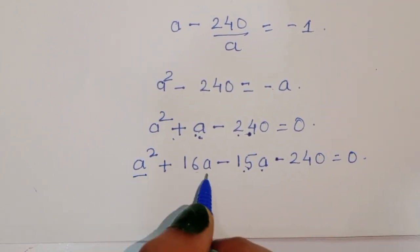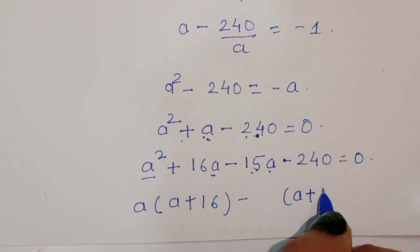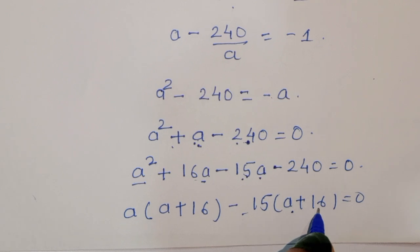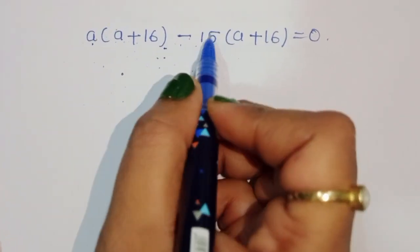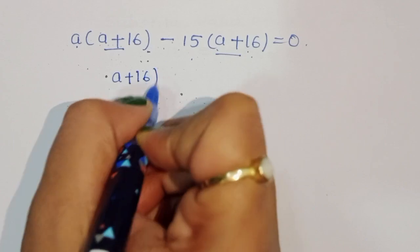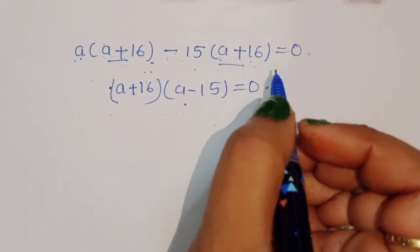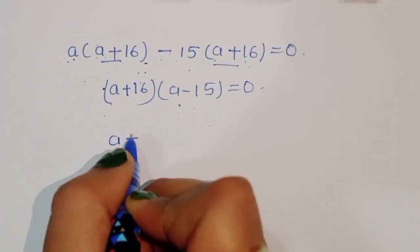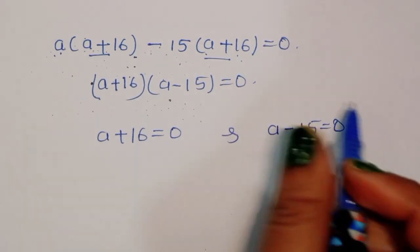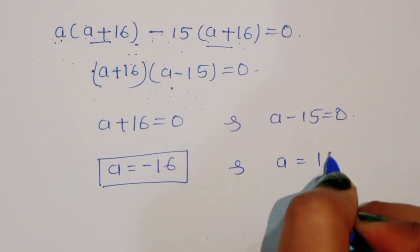Factoring, we get (A plus 16)(A minus 15) equals zero. This gives two solutions: A plus 16 equals zero, so A equals minus 16, or A minus 15 equals zero, so A equals 15.